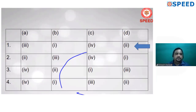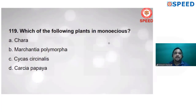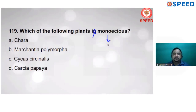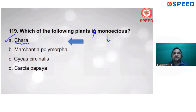Next question: which of the following plants is monoecious? If male and female sex organs are found on the same plant, it is known as monoecious. In Chara (a green alga), male sex organ (globule) and female sex organ (nucule) are both found on the same plant. So alternate A is correct.